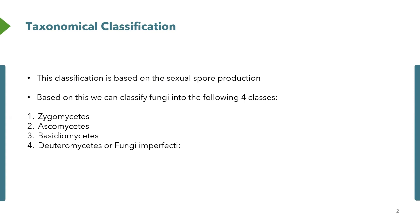Basically, it looks at the spores that are produced at the sexual stage. Based on this kind of spores, we can classify these fungi into four main classes: zygomycetes, ascomycetes, basidiomycetes, and deuteromycetes.